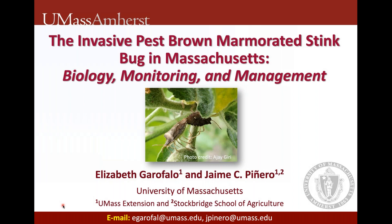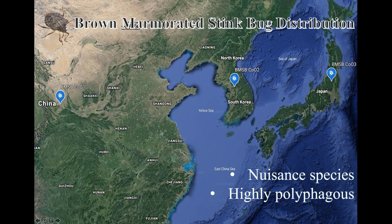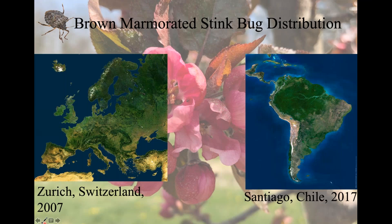Before I hand things over to Dr. Pinheiro, I'm going to talk about brown marmorated stink bug distribution, biology, and monitoring. Brown marmorated stink bug originates from China, South Korea, and Japan. It's considered a nuisance pest in its native range, but it's a highly polyphagous bug — it's not very picky in what it eats and will feed on just about any plant. It's been recorded feeding on more than 300 host plants. It's also an adept traveler, enabling it to hitch a ride on a car, suitcase, or shipping freight container and get anywhere around the world. It has established a population in Europe — first noticed in 2007 in Zurich, Switzerland — and also in Santiago, Chile, discovered in 2017.